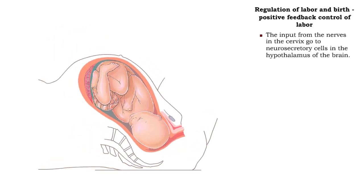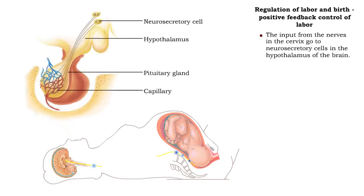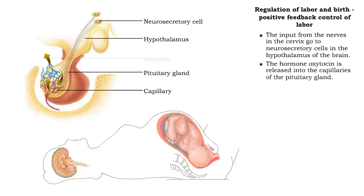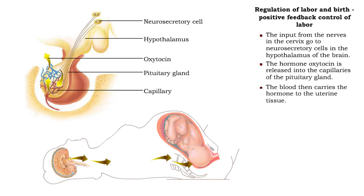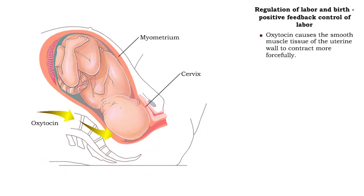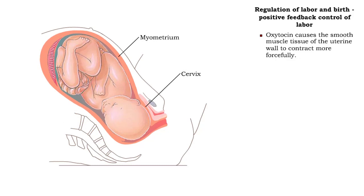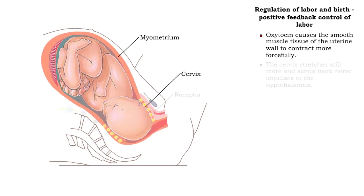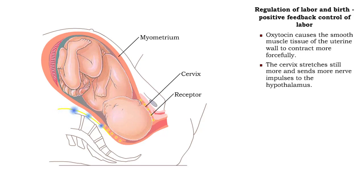The impulses received from the nerves in the cervix trigger neurosecretory cells in the hypothalamus to secrete and release the hormone oxytocin. Oxytocin diffuses into the blood capillaries of the pituitary gland and is transported to the uterus. Oxytocin stimulates the smooth muscle tissue of the uterine wall to contract more forcefully. These more forceful contractions push the baby further into the birth canal, stretching the cervix more and triggering the stretch receptors to send more impulses to the hypothalamus.